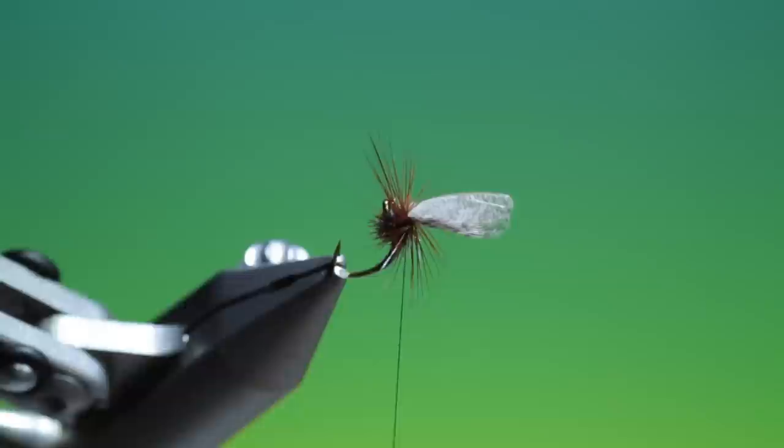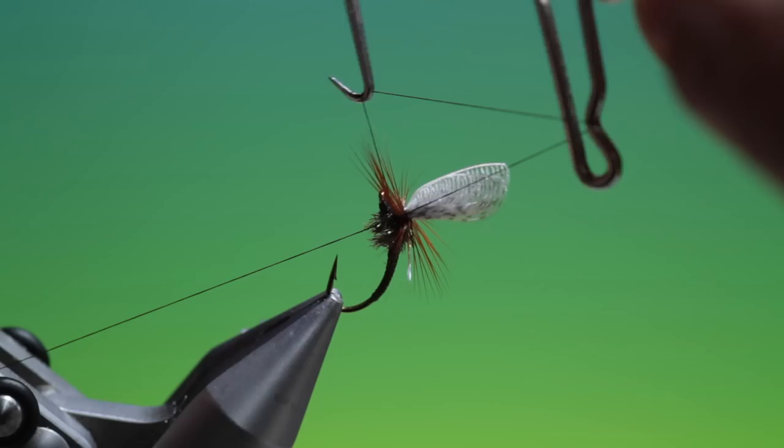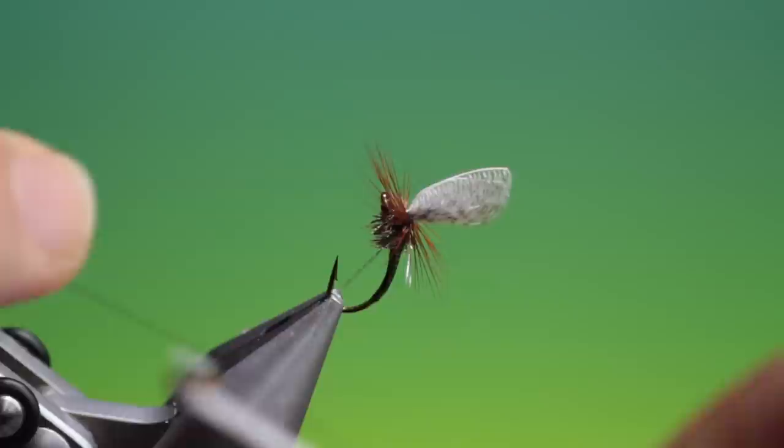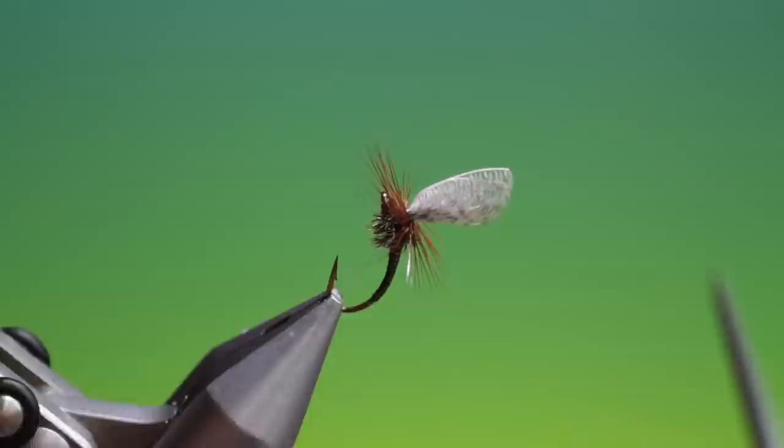Take your whip finisher. And go under the barbules again. So you don't tie any of them down. That one to lock it. And just a drop of varnish on there. Finish her again. There we go. Like so. Remove that.